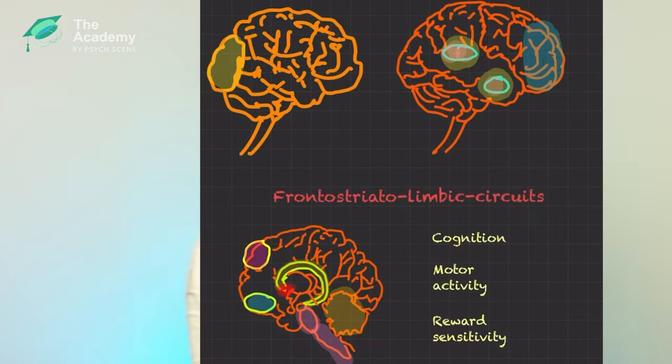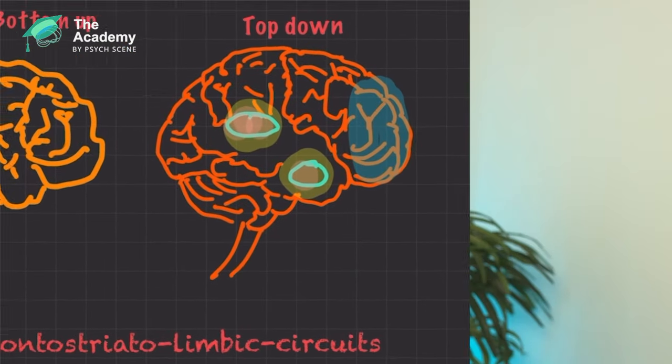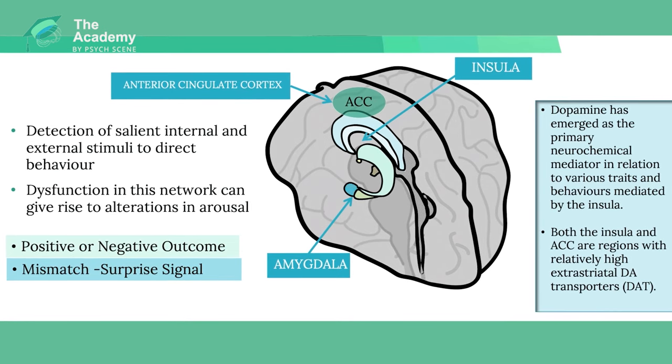Regarding anger dyscontrol — it's essentially about top-down inhibition. We are looking at activation of the mesolimbic or salience pathway responsible for anger dyscontrol. There are two main ways of addressing it: we can target the salience pathway directly, or we can strengthen the prefrontal cortex to enhance top-down inhibition.